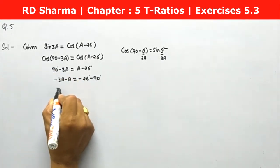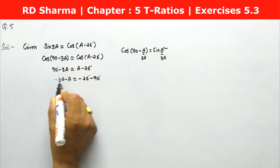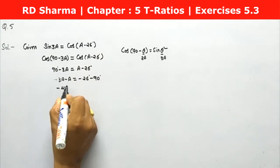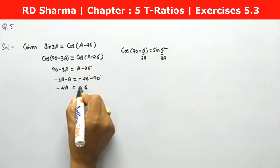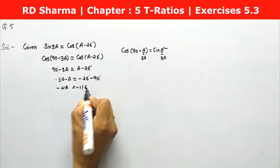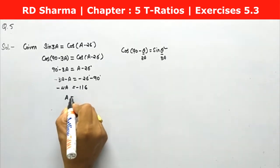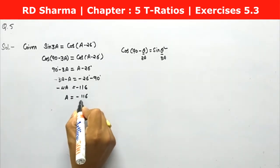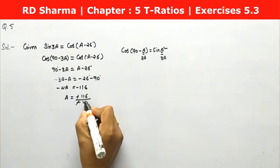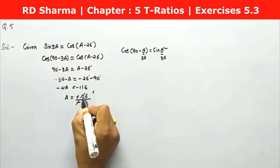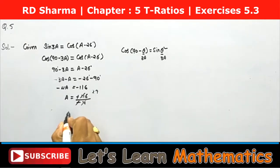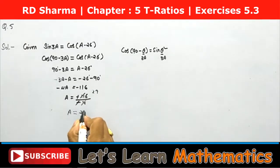Now we solve the equation. Bringing the terms together: minus 3a minus a gives minus 4a, and minus 26 minus 90 gives minus 116. So 4a equals 116 degrees, which means a equals 116 divided by 4, giving a equal to 29 degrees.